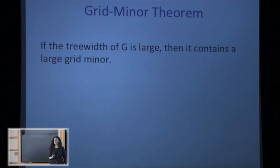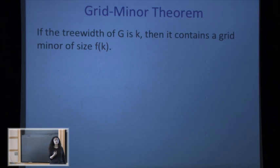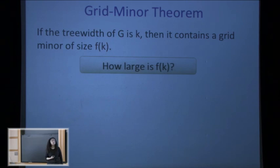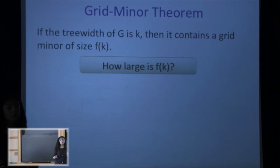So far I've been vague — I just said large tree-width means a large grid minor. Now I want to be more precise. If the tree-width is k, then we have a grid minor of size f(k) × f(k), and throughout this talk k always denotes the tree-width. We want to know how big we can make f(k): the bigger the grid the better, since knowing the tree-width is k but only having a grid of size log log log k is not that helpful.